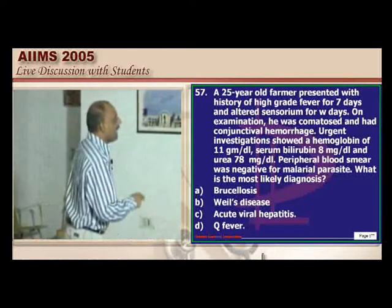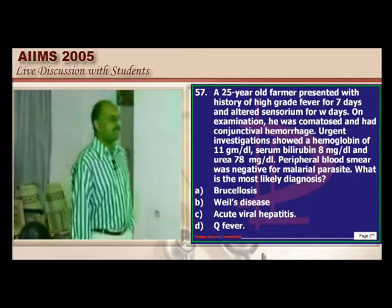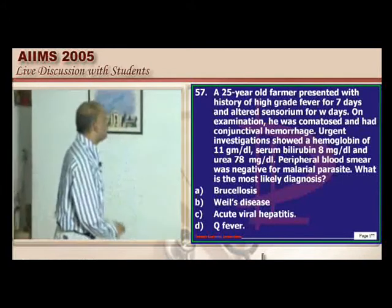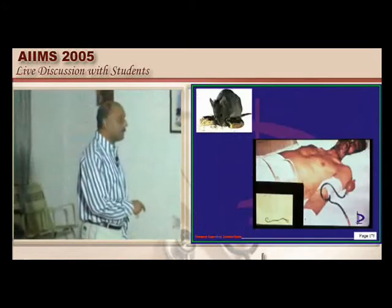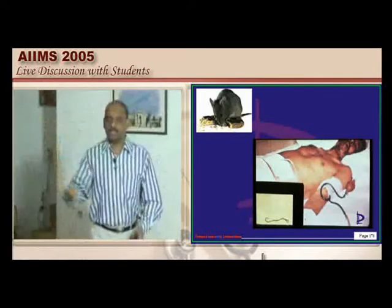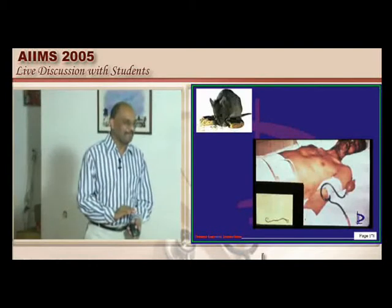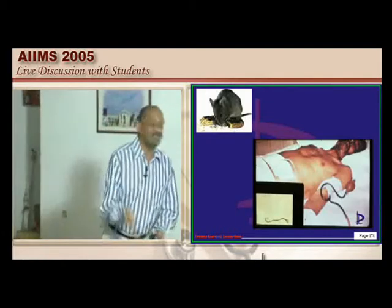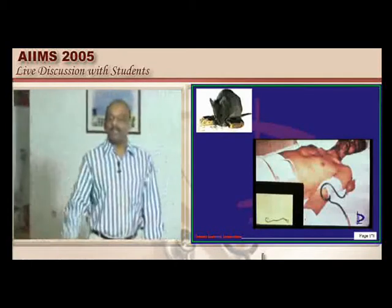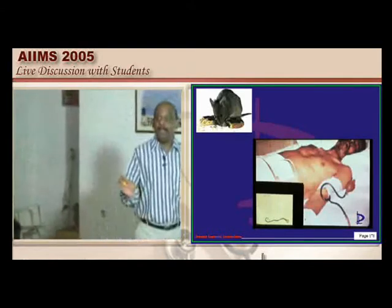A patient with high-grade fever, conjunctival hemorrhage, hyperbilirubinemia, and a negative peripheral smear for malaria — this is leptospirosis caused by Leptospira icterohaemorrhagiae. The typical scenario is a farmer walking barefoot in fields presenting with high fever, renal dysfunction, and jaundice. MP is negative; leptospira may also be negative initially but can turn positive by day 9 or 10. In this scenario, give crystalline penicillin for leptospira and also start anti-malarials for broader coverage.